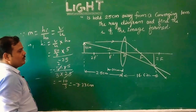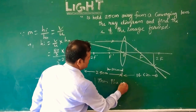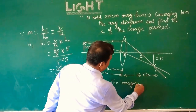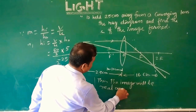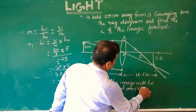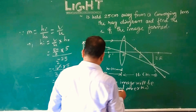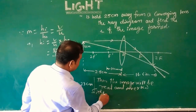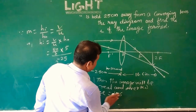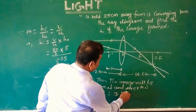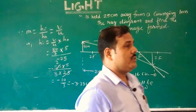Thus, the image is real and inverted. The size of the image is 3.33 centimeter. So, that is how we solve this type of question. Children, you can do it — all right!